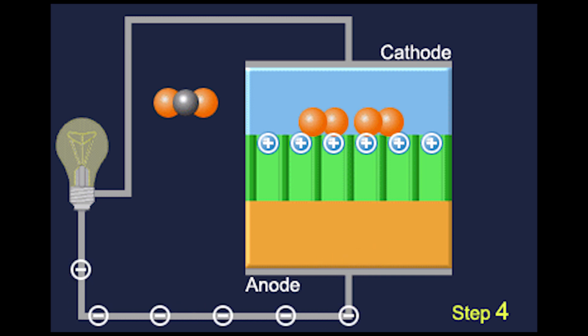Meanwhile, the electrons, initially separated from the hydrogen atoms, follow a circuit instead and power a load along the way, producing the electrical energy generated by the fuel cell.